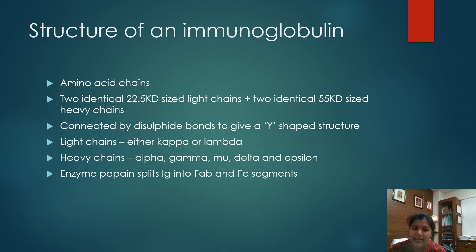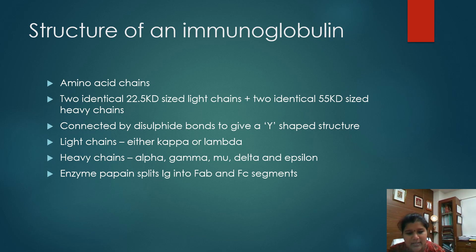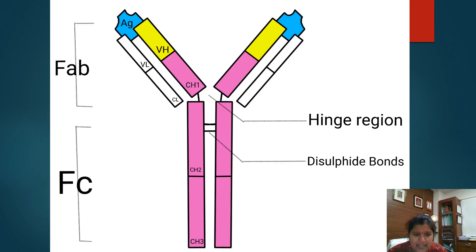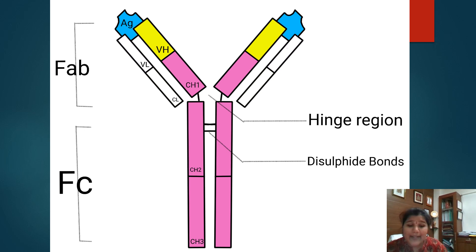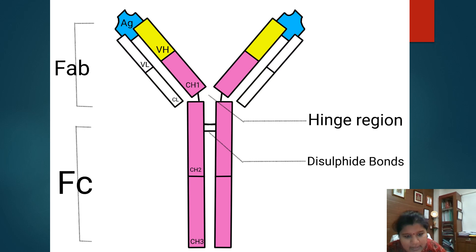Based on the heavy chains, these immunoglobulins are further classified. The enzyme papain splits the Ig at a particular site, making it into two segments: the FAB region and the FC region. As we can see here, this is the Y-shaped structure of the immunoglobulin with FAB and FC regions cut by papain. In the center we can see the hinge region that favors antibody binding to an antigen and helps in conformational changes of the antibody.